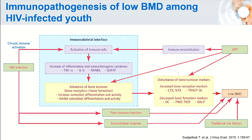This slide shows the immunopathogenesis of low bone mineral density among HIV-infected youth. HIV-infected individuals share traditional risk factors with HIV-uninfected individuals, but they also have HIV infection-specific factors and ART effects impacting bone mineral density. HIV infection causes chronic immune activation, which increases inflammatory cytokines and osteoclastogenic cytokines, resulting in an imbalance between bone turnover where bone resorption overcomes bone formation.